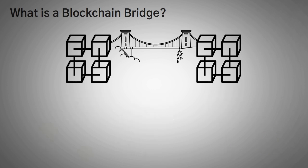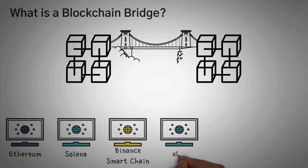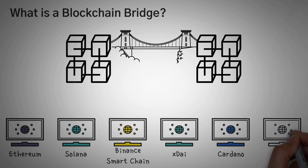There are actually many different cryptocurrency networks. For example, there's the ethereum network, the solana network, the binance smart chain network, the xdai network, the cardano network, the polygon network. You get the picture.